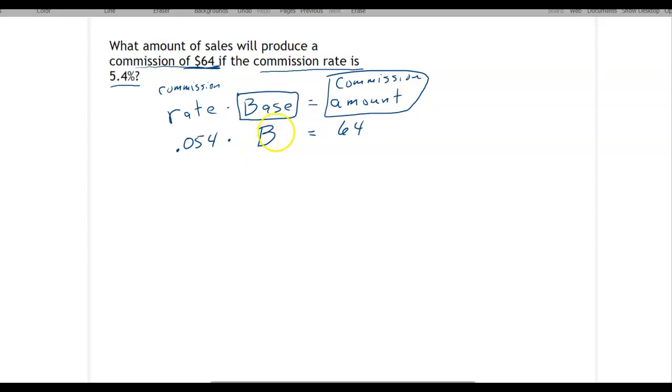Some people like to write an X. It doesn't matter what the variable is. In any case, to solve for B, we simply divide both sides by the coefficient 0.054. You may want to pause the video here to do that.